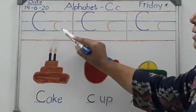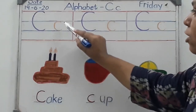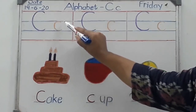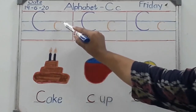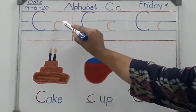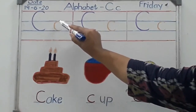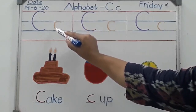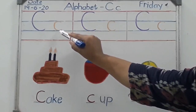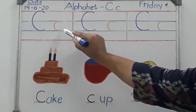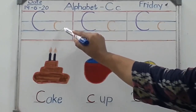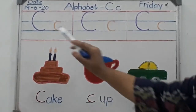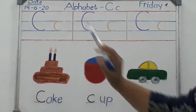Now to write small c, put your pencil point slightly below the first blue line, then go up and touch the first blue line. Make a curve, go down, touch the second blue line, and go a little bit up. This is our small c. Capital C and small c.